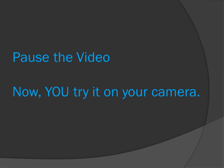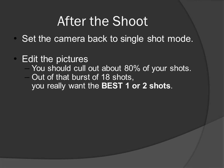Pause the video and try it on your camera. After the shoot, set the camera back to single shot mode. Edit the picture — you should cull out about 80% of your shots. Out of that burst of 18 shots, you really want just the best one or two shots. You don't need the other 16 or 17 shots.